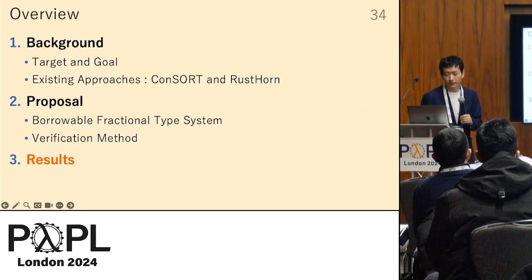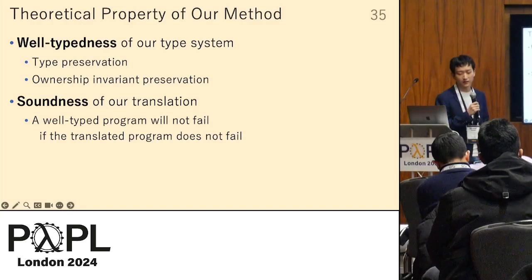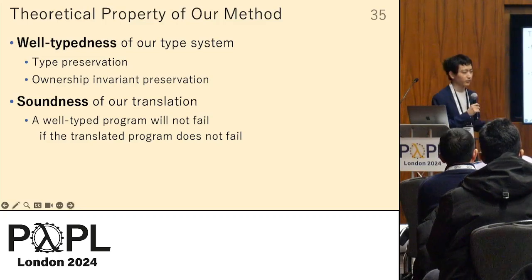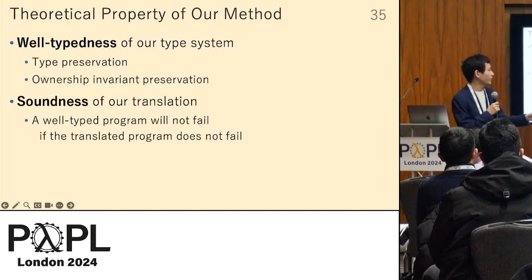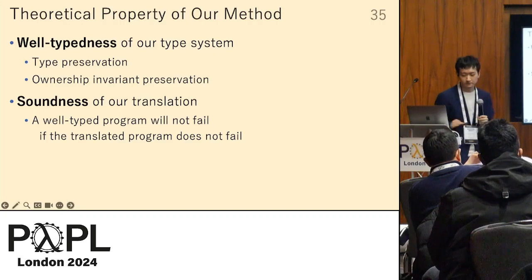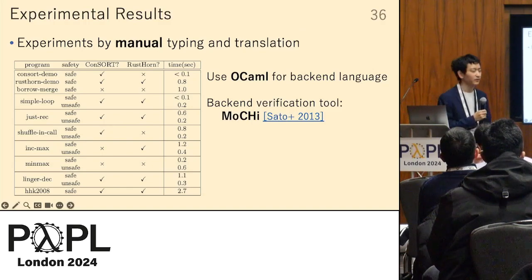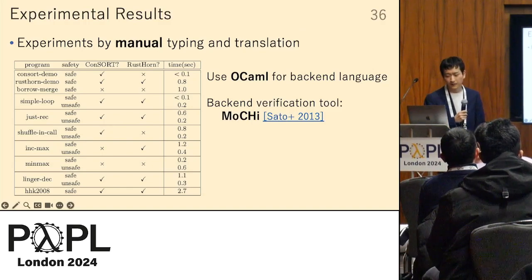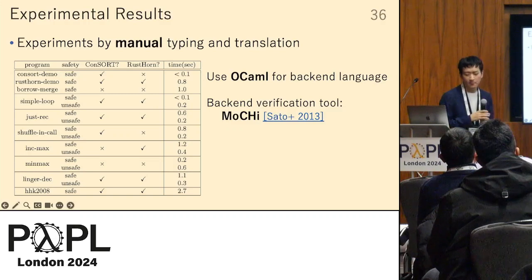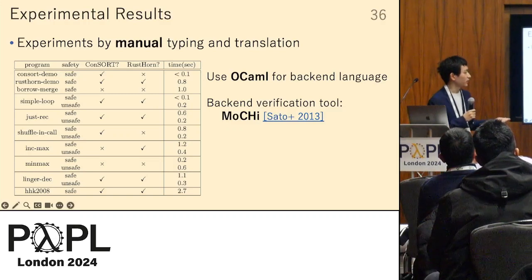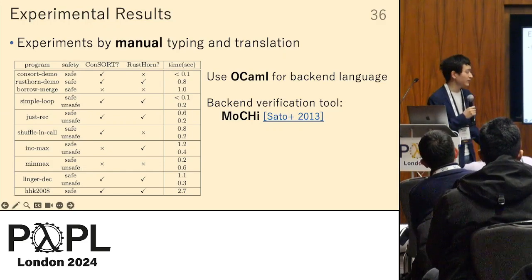Moving on to our results: we proved the well-typedness of our type system and the soundness of our translation — showing that a well-typed program will not fail if the translated program does not fail. We also conducted preliminary experiments for some benchmark programs by manual typing and translation, translating the original program into OCaml and verifying with the verification tool Mochi. This experiment showed that our method successfully works correctly for the benchmark programs.